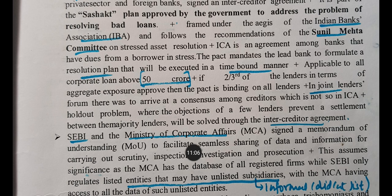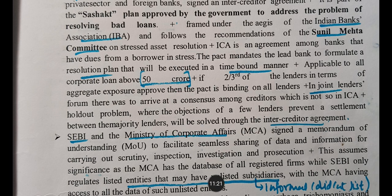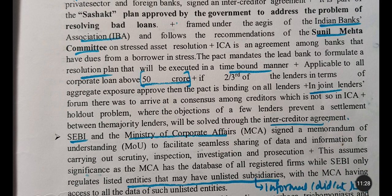This MOU assumes significance because the Ministry of Corporate Affairs has the database of all registered firms, while SEBI only regulates listed entities that may have unlisted subsidiaries. For unlisted subsidiaries, SEBI does not have data, but the Ministry of Corporate Affairs has access to all data of such unlisted entities.